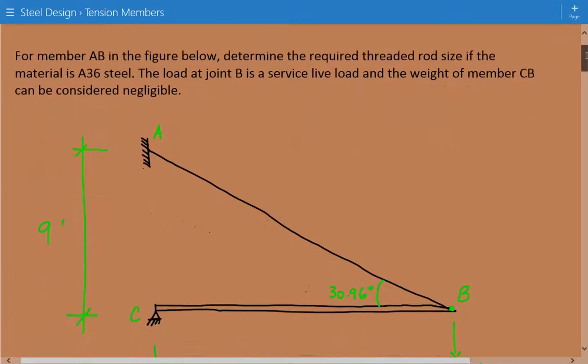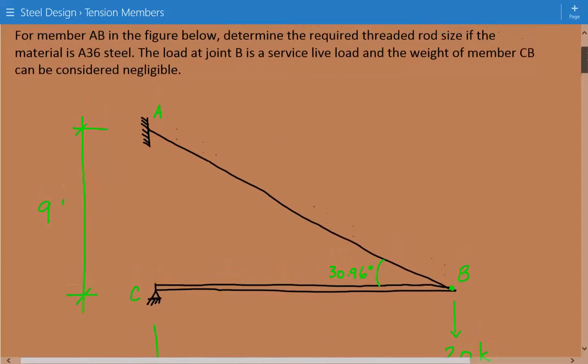The problem statement that we have is, for member AB in the figure below, we need to determine the required threaded rod size. If the material is A36 steel, the load at joint B is a service live load, and the weight of member CB can be considered negligible.